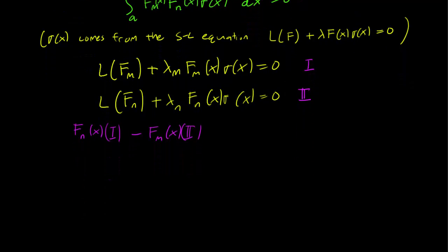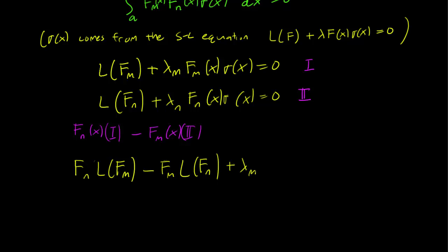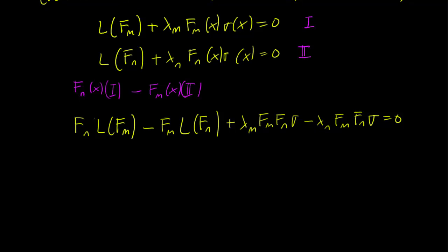We get a resulting equation: F_n * L(F_m) minus F_m * L(F_n) plus lambda_m * F_m * F_n * sigma minus lambda_n * F_m * F_n * sigma equals 0. I'm going to suppress the x-dependence to make things a bit easier to write.